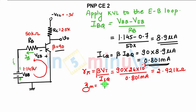Once you know Rpi, you can find GM. Equation for GM is ICQ divided by VT. ICQ you know. VT you know. We can find GM as 30.807 milliampere per volt.